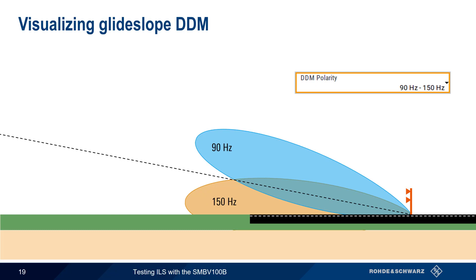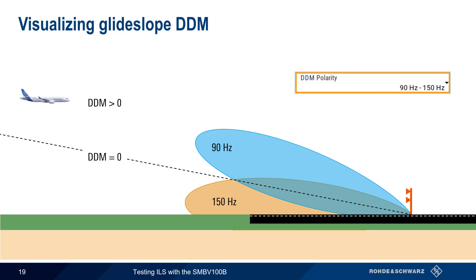As with localizer, an aircraft on the glide slope will see the same depth of modulation from both lobes, and DDM will be zero. Flying above the glide slope moves the plane more into the 90 Hz lobe, and DDM increases. Flying below the glide slope moves the plane more into the 150 Hz lobe, causing a decrease in DDM. Similar to the way the localizer works, the glide slope needle is controlled by these changes in DDM.